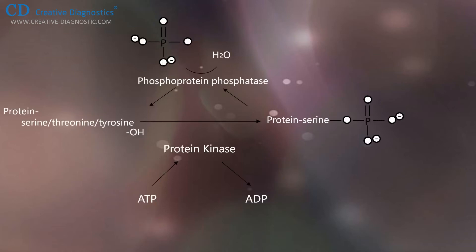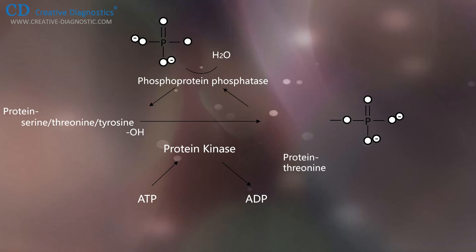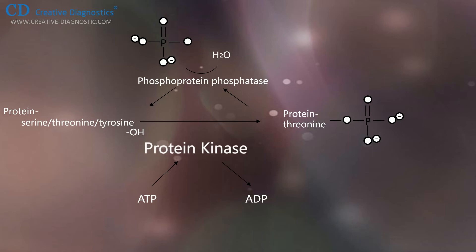Most proteins are found to be phosphorylated at serine or threonine residues, and many proteins involved in signal transduction are also phosphorylated at tyrosine residues. Lots of protein kinases exhibit a strict specificity for phosphorylation of either serine, threonine, or tyrosine residues.